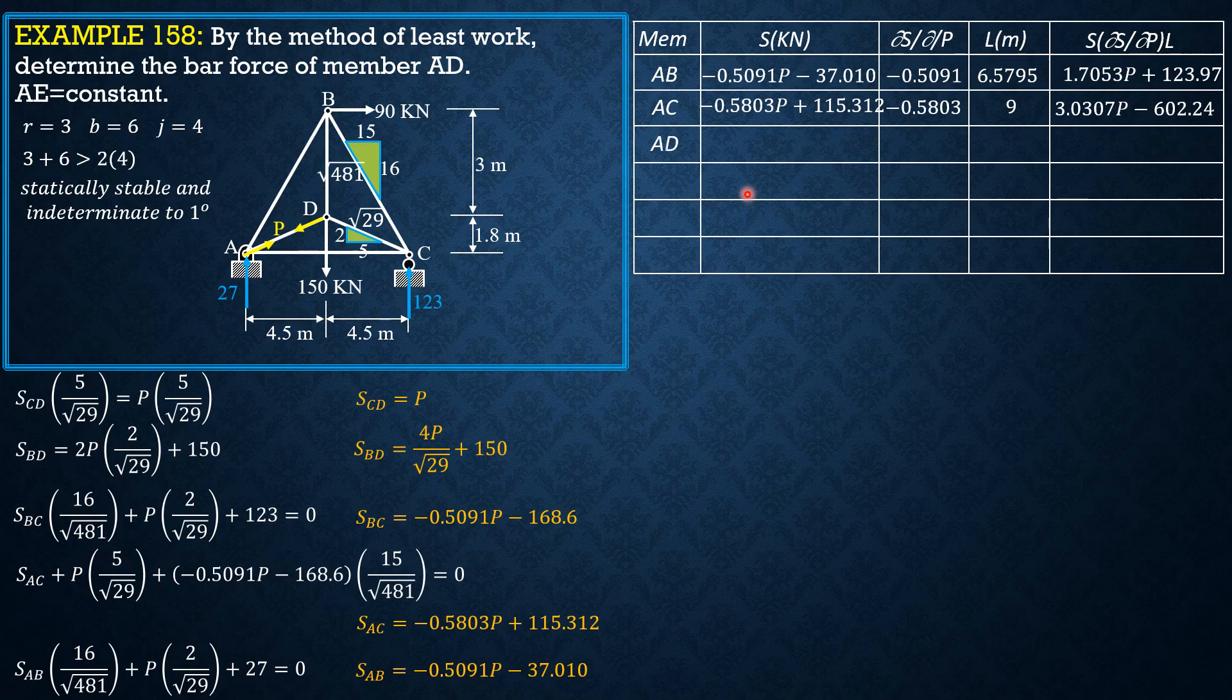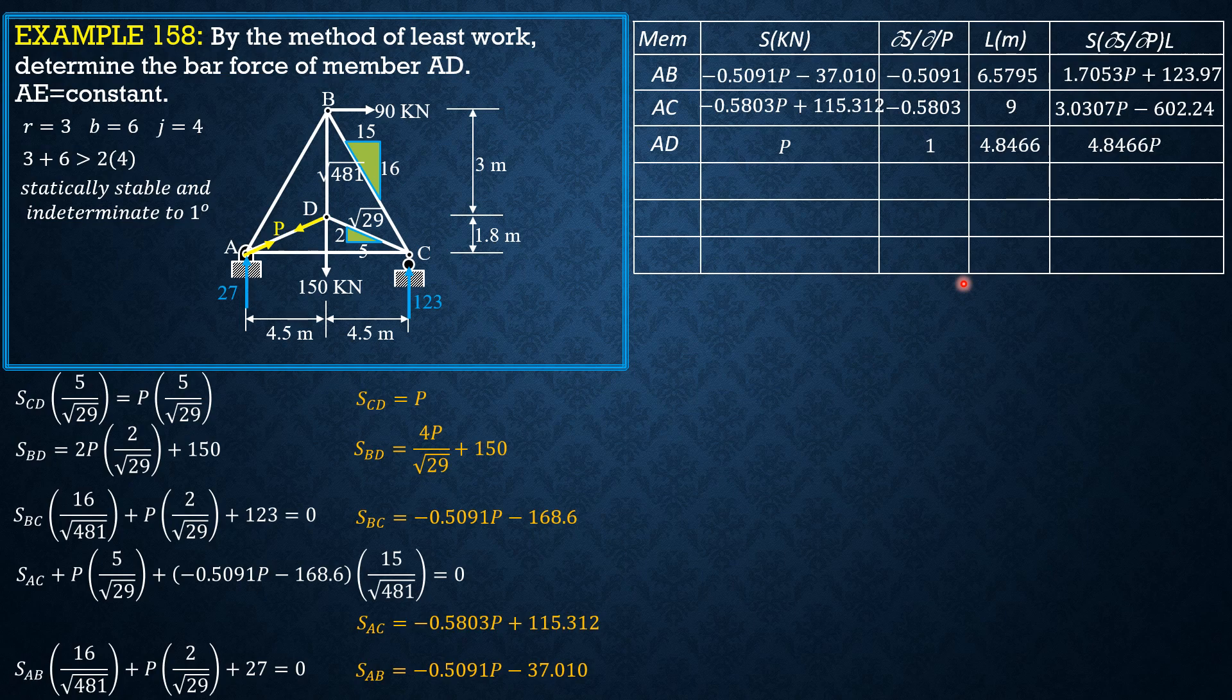Then we have AD, which is P, derivative 1, length square root of 4.5 square plus 1.8 square, so that's 4.8466 meters. So the product 4.8466P.